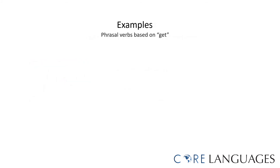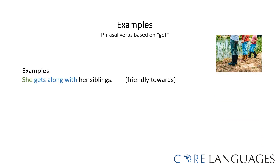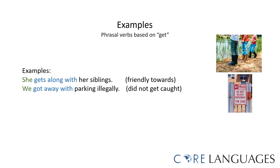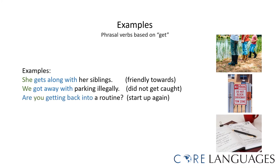Here are examples of sentences using phrasal verbs based on the verb 'get.' She gets along with her siblings — to get along means to be friendly towards; I could also say she is friendly towards her siblings. We got away with parking illegally — to get away with something means to not get caught; I could also say we did not get caught parking illegally. Are you getting back into a routine? — to get back into means to start up again; I could also say are you starting up a routine again?